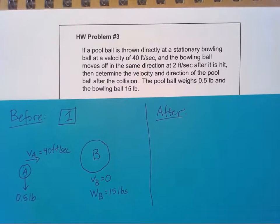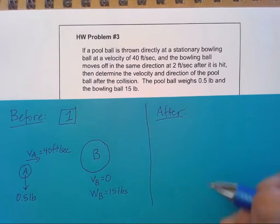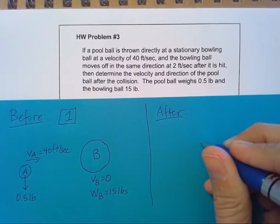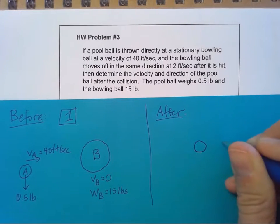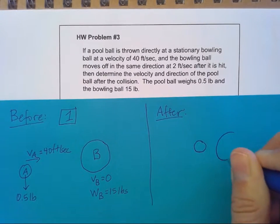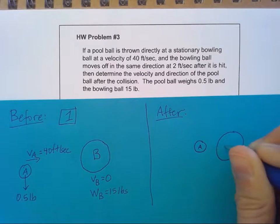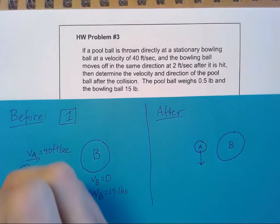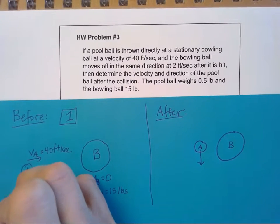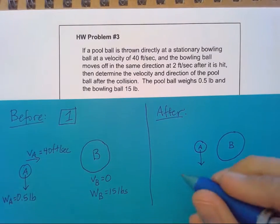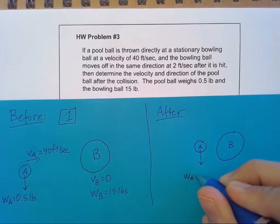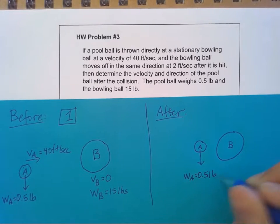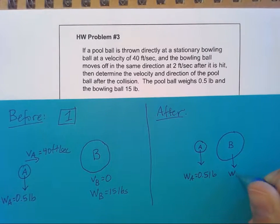And then after I'm going to have a situation where we've got the pool ball and the bowling ball. So I've got A and B. No loss in their weight. So weight of A is still half a pound, weight of B is still 15 pounds.